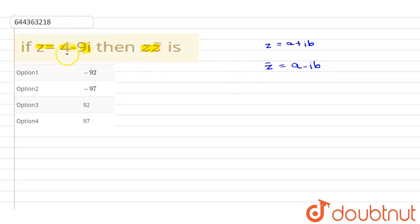Now comparing this we can write if we have z, we have z is equal to 4 minus 9i and z cap will be equal to 4 plus 9i. This is what we get, we have z and z cap.